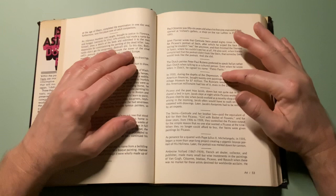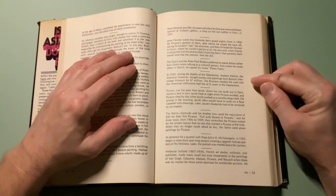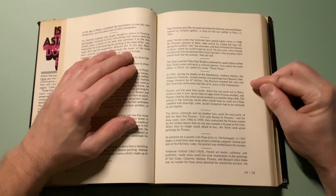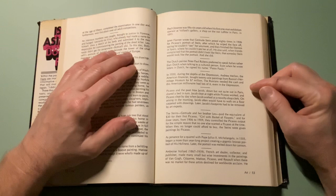In 1930, during the depths of the Depression, Andrew Mellon, the American financier, bought 21 paintings from Russia's Hermitage Museum for $7 million. The Russians needed cash, and the American millionaire had lots of it, even in the Depression.